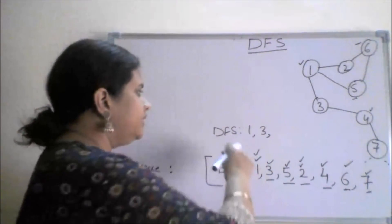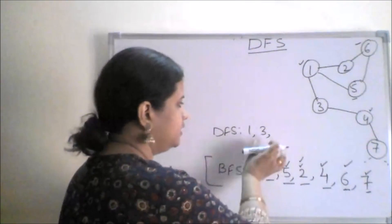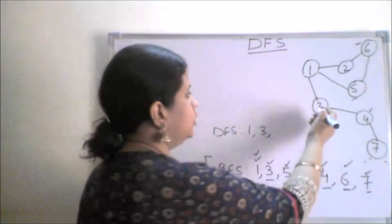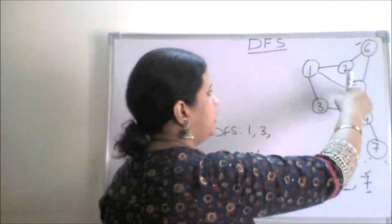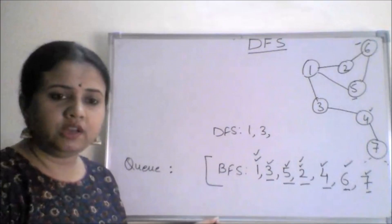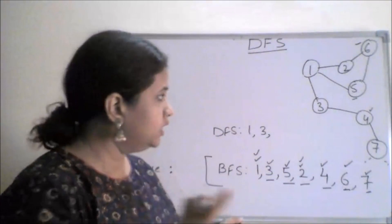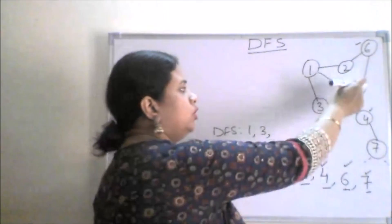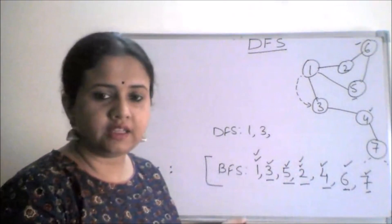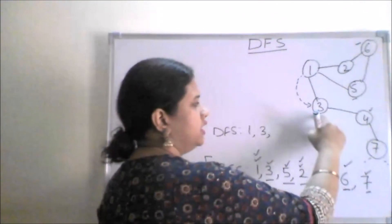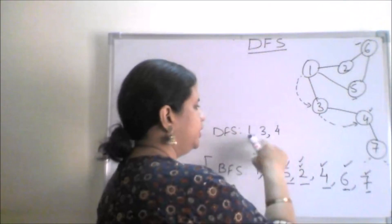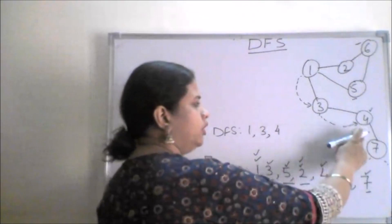Now let's see how DFS is different from BFS. In DFS, the first two steps are the same — I traverse node one. Then from the adjacent nodes of one — three, five, and two — we do not go to every other node. We choose any one; I have chosen three. Now I go as deep as I can. From three, the adjacent node is four, so I move to four and add it to the visited list.